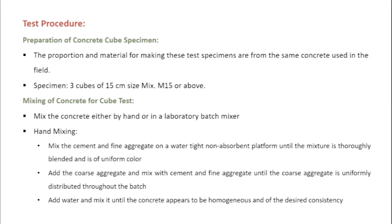The strength of concrete increases with age. The specimens are three in number of 150 mm size. This compression testing machine experiment is used for grades of concrete of M15 and greater. Grades include M5, M7.5, M10, M15, M20, M25, M30, M35, M40 and above, but the grade of concrete should be M15 or greater to follow this test.